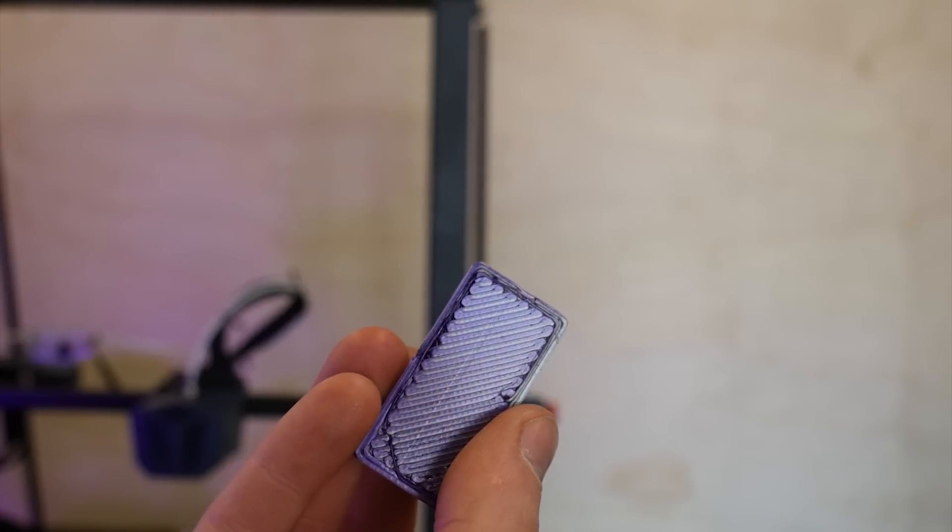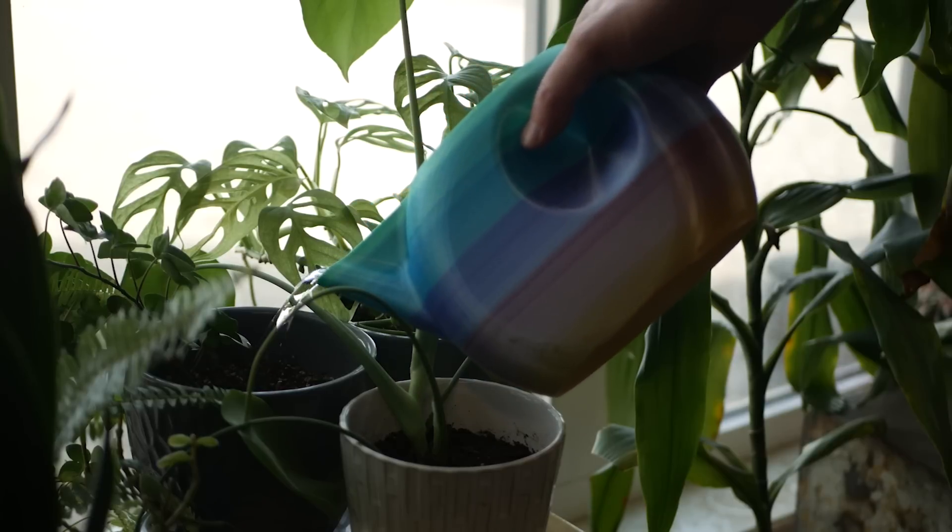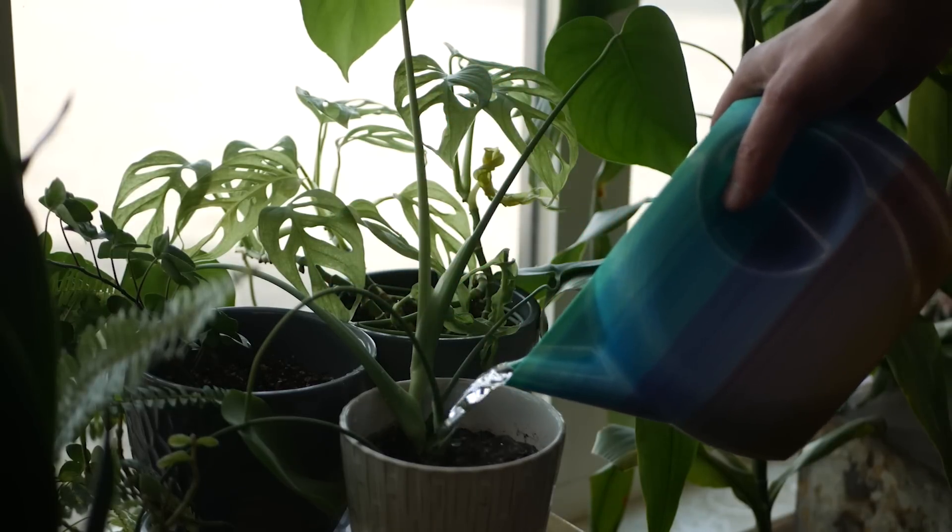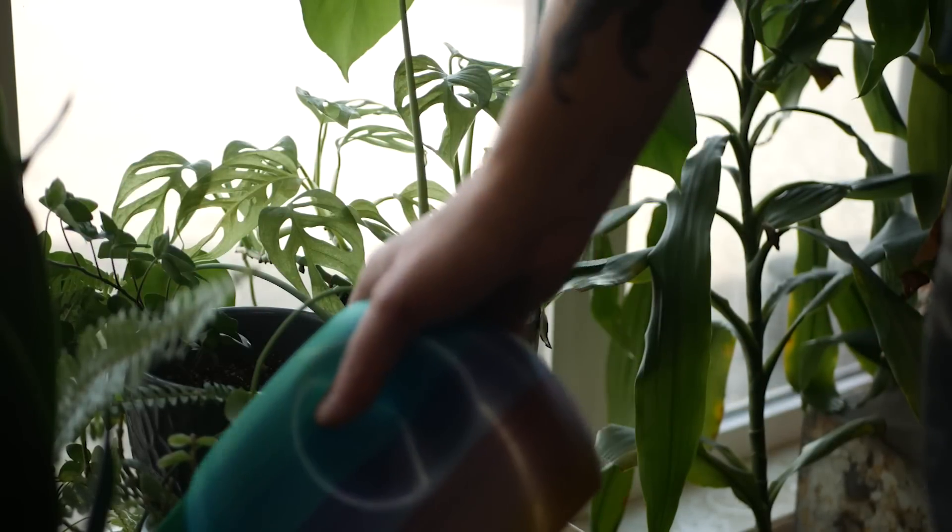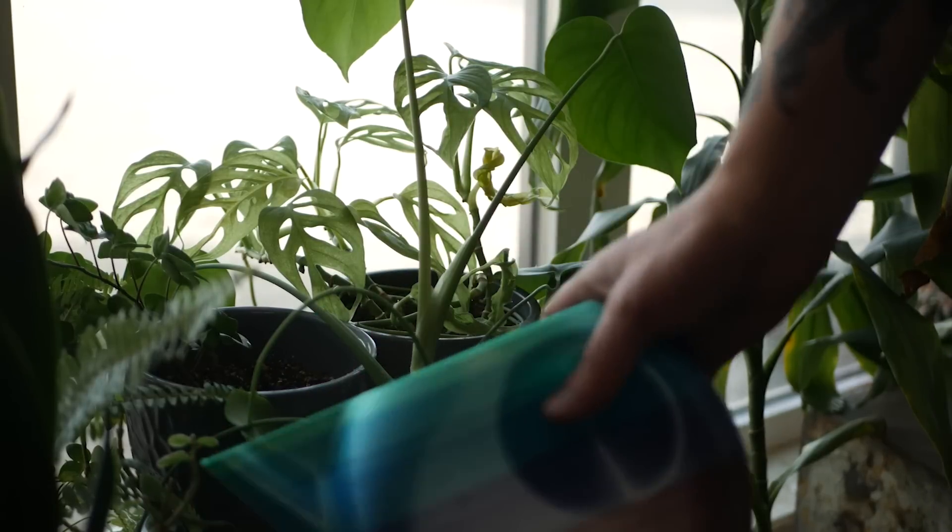One print I use almost daily is this watering can, but I'd love a bigger one for the outside garden. Let's cue this thing up in 3D Jake's magic PLA with a layer height of 0.75 millimeters.